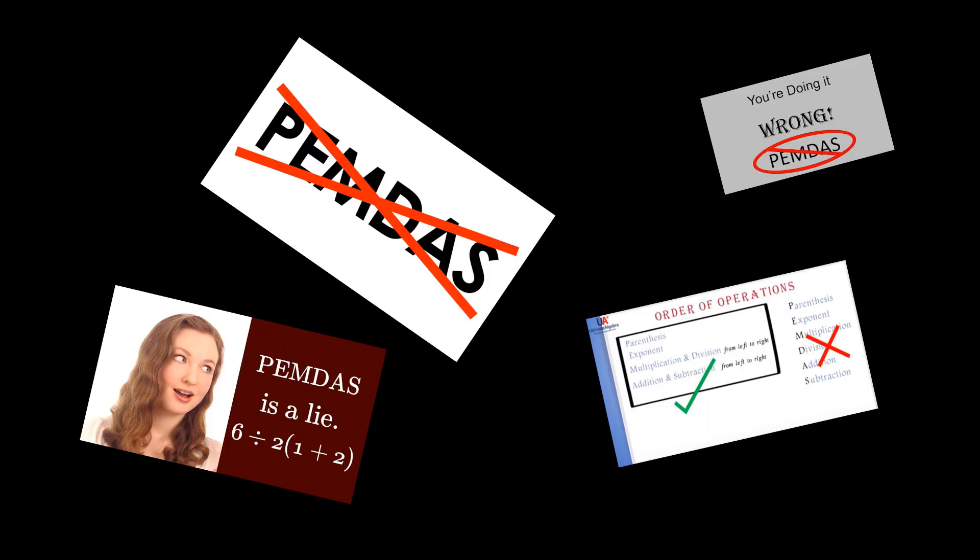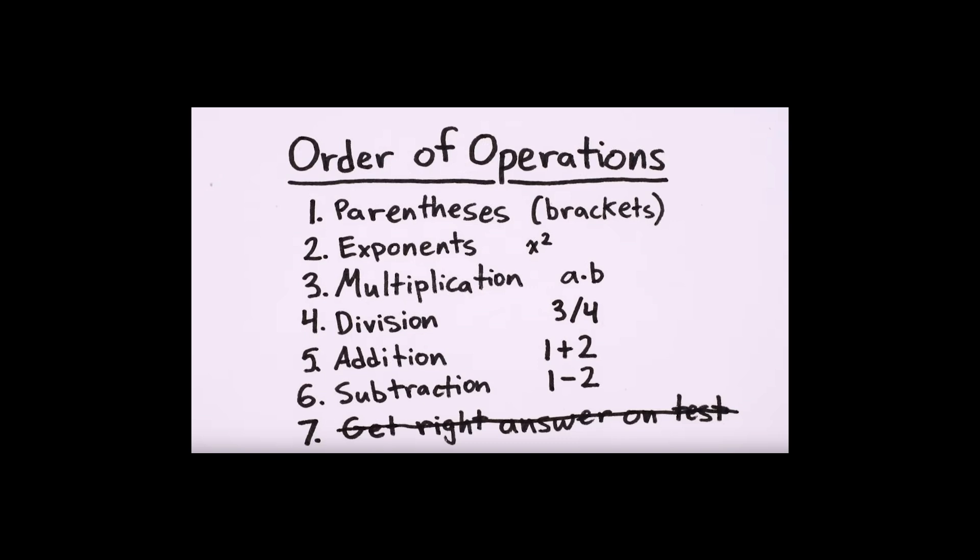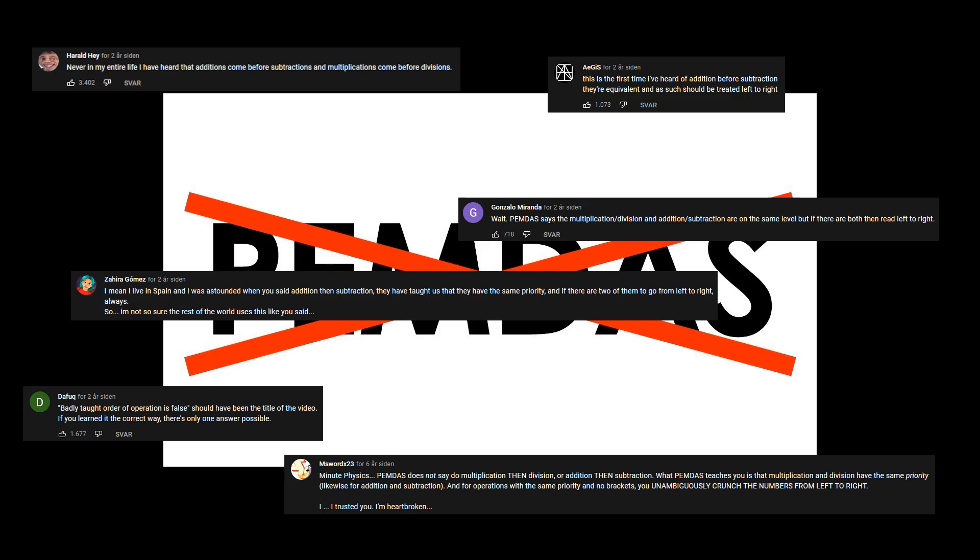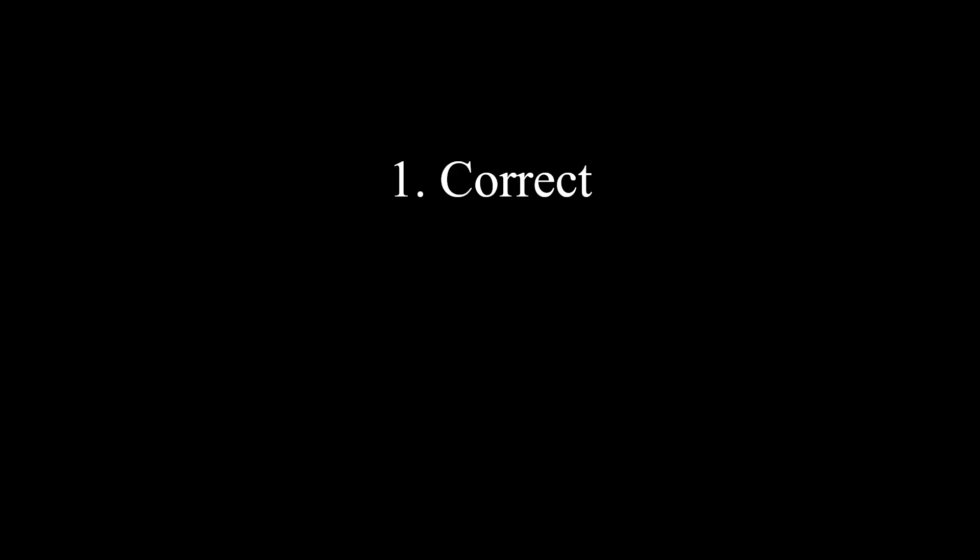Many others before me have tried to explain why PEMDAS is terrible, and in my opinion, most of them have done a poor job of it. And the currently most viewed example on YouTube is no exception. Particularly, it states that in PEMDAS, you are supposed to evaluate multiplication before division. And every commenter and their grandma has pointed out that that's not what PEMDAS says. If you are one of these people, that makes you two things: correct, and part of the problem.